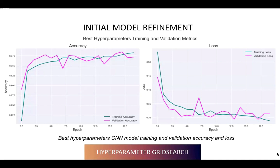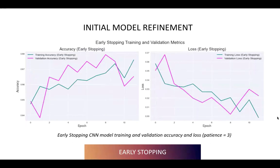After observing the extended plateau on the accuracy and loss graphs, we determined that implementing early stopping would be the next best step in model refinement. Implementing early stopping post-hyperparameter tuning ensured the model was already finely optimized. By halting training when the model's performance plateaued on the validation dataset with patience equal to 3, early stopping acted as an effective regularization mechanism, preventing the model from memorizing noise and further improving its generalization ability.